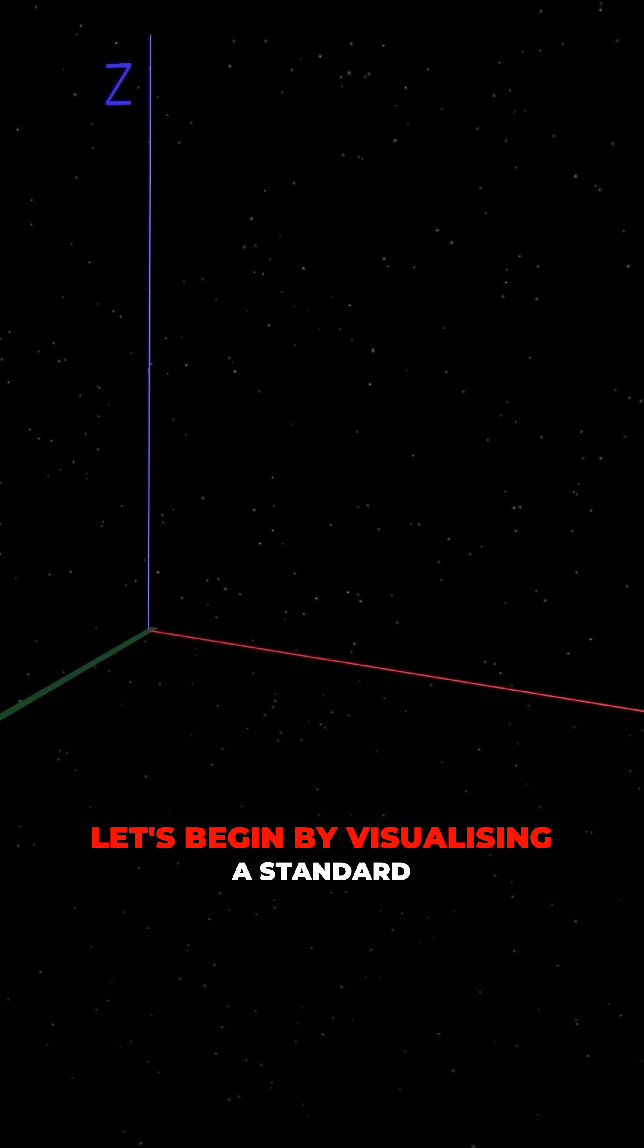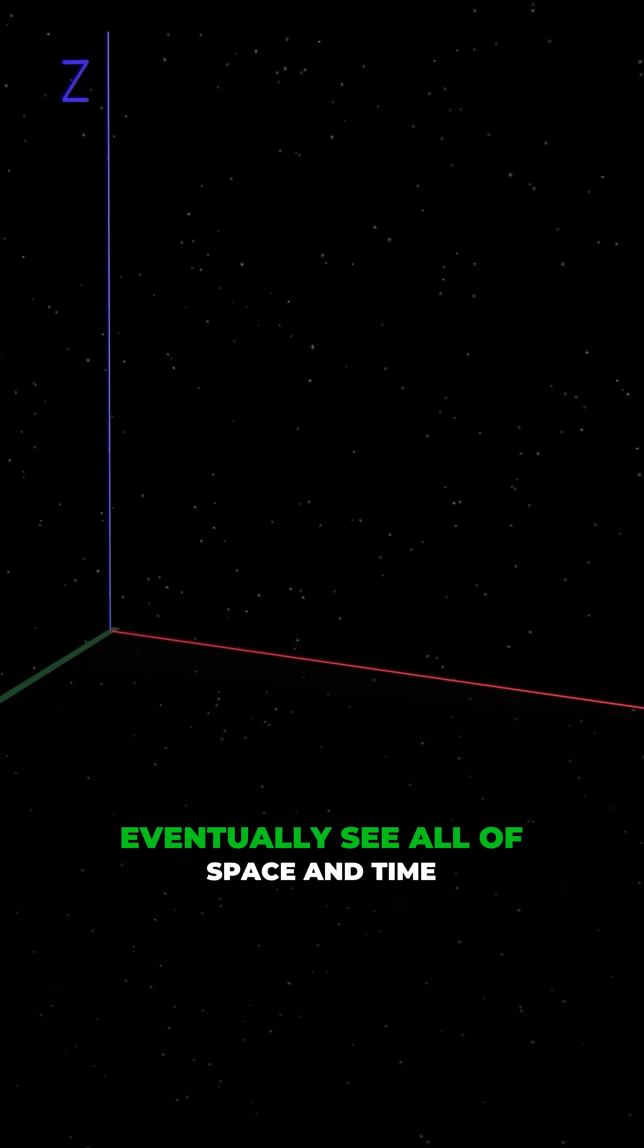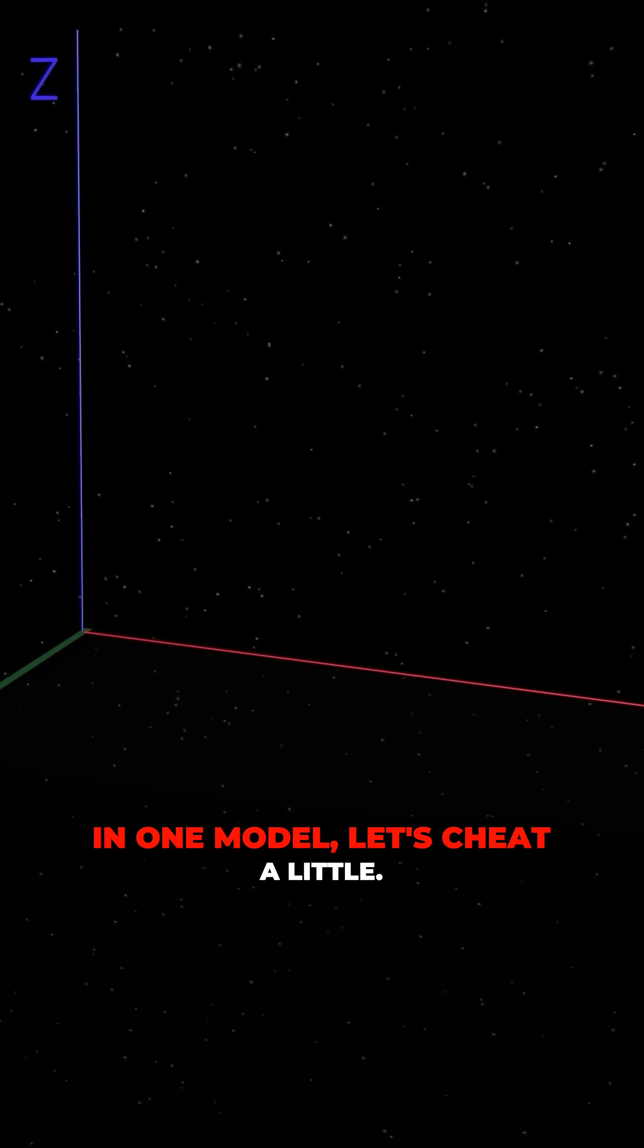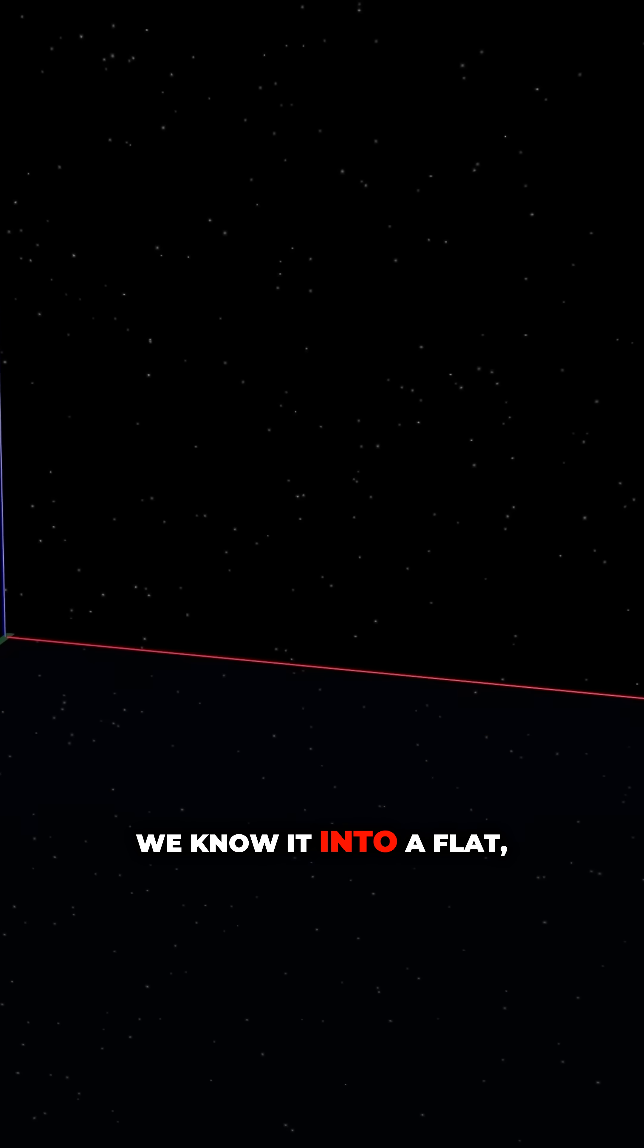Let's begin by visualizing a standard 3D space. But because we want to eventually see all of space and time in one model, let's cheat a little. Let's compress all of 3D reality as we know it into a flat, two-dimensional place.